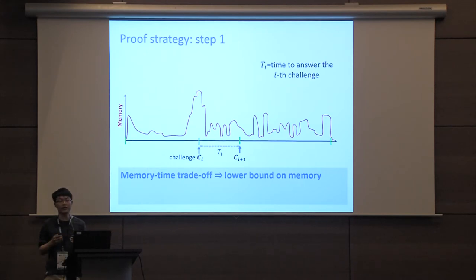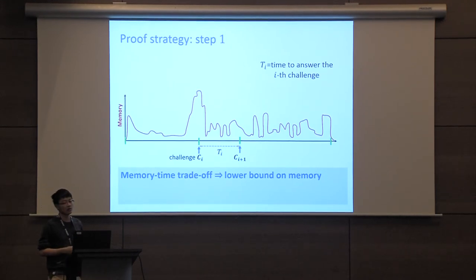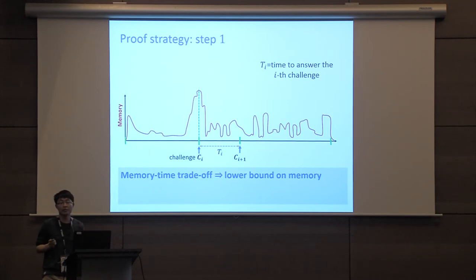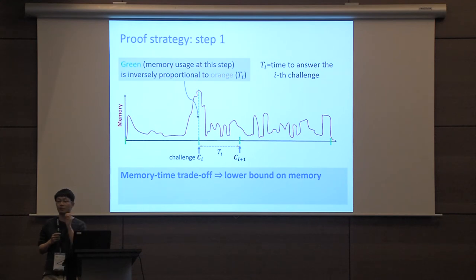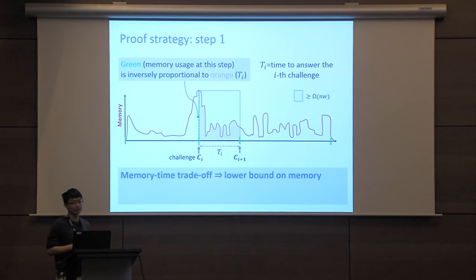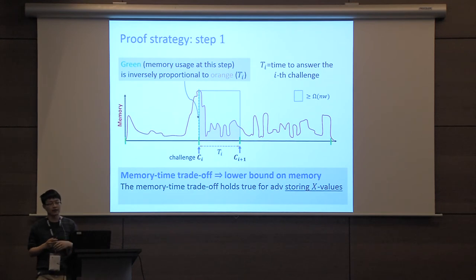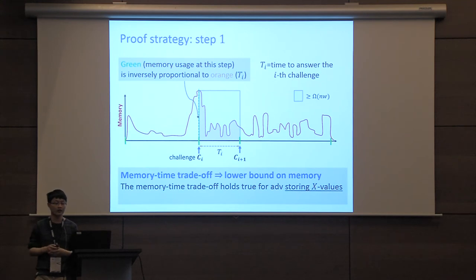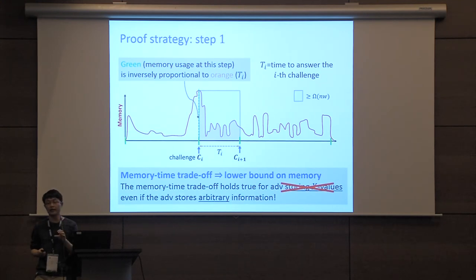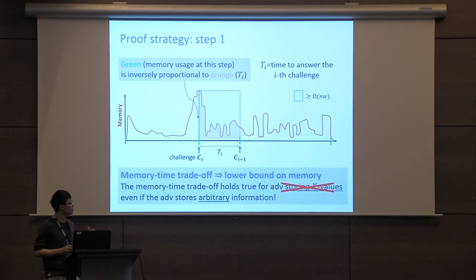To prove the theorem we first show a single-shot memory-time trade-off. Given challenge C_i, let T_i be the time needed to answer challenge i. We show that at the step right before the challenge is revealed, the amount of memory used is inversely proportional to T_i — specifically, memory times T_i is at least omega(nw). We have already seen this trade-off in the special case where the adversary only stores x values. Here we show that even if the adversary stores arbitrary information, the memory-time trade-off still holds.